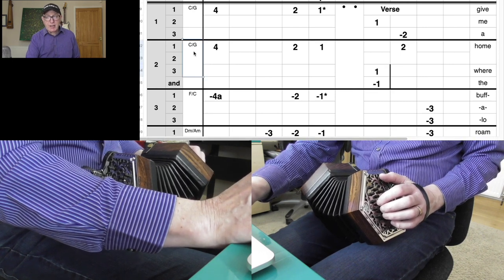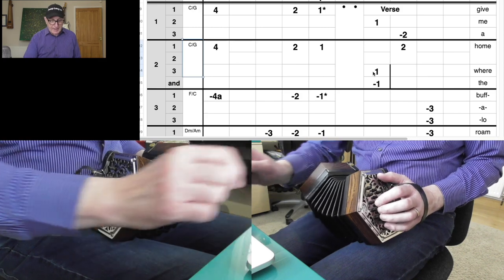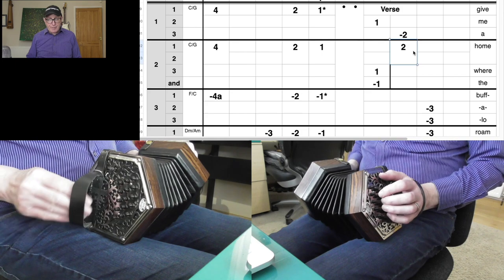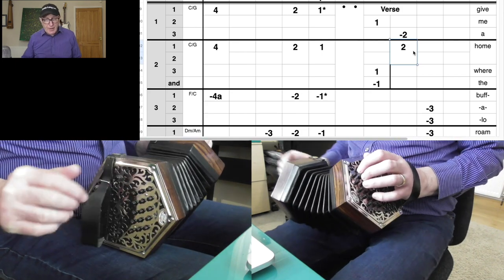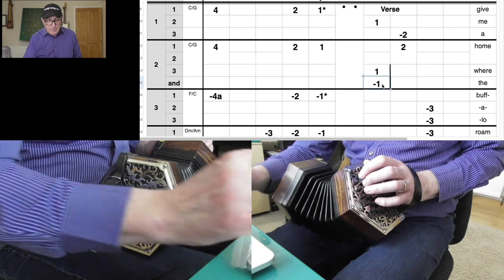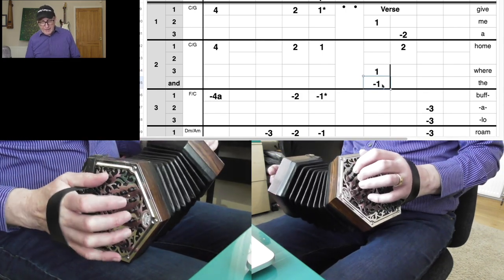So on the right hand side for the word 'home,' we've got button seven, finger two, push. And then we have button six, finger one, push, pull. Let's just do the right hand for that bar.